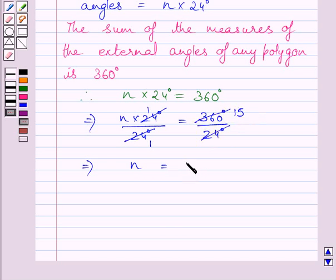So value of N is 15. Note that this term has no unit as it represents the number of exterior angles.